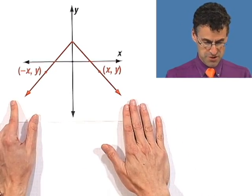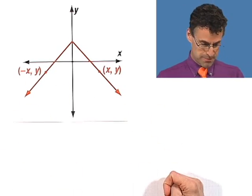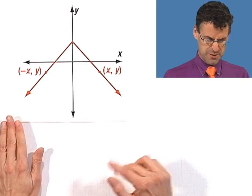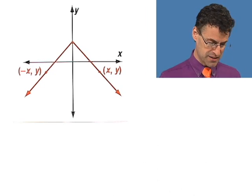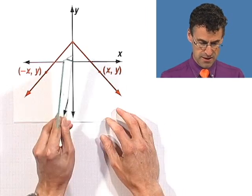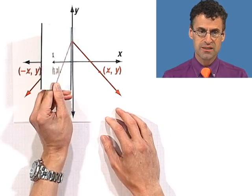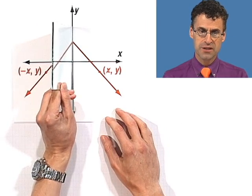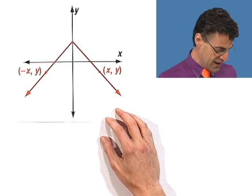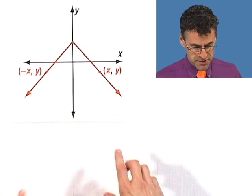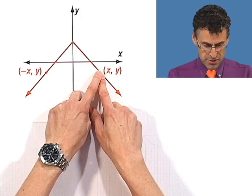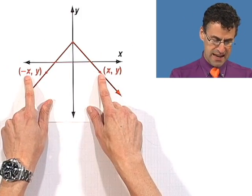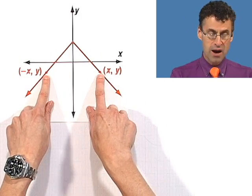Let's look at another example of a function. This is a crazy looking function that involves absolute values in some complicated way. Looking at the picture, notice there's a symmetry with respect to the y-axis. You can check it out for yourself — there's a reflection of it. You can see this in terms of taking an x value and a y value on the graph: notice that the flip, which is negative x, has the same y value.